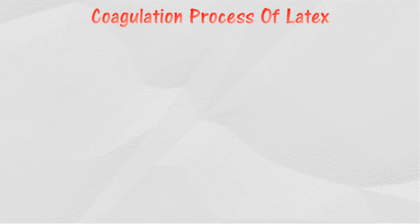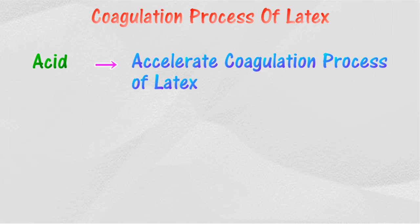The coagulation process of latex occurs when latex is exposed to air, due to the action of bacteria in latex which produces acid. The coagulation process can be accelerated by the addition of dilute acid solutions as a supplier of ions into rubber latex. The acid commonly used is methanoic acid, where coagulation will occur within a few minutes.